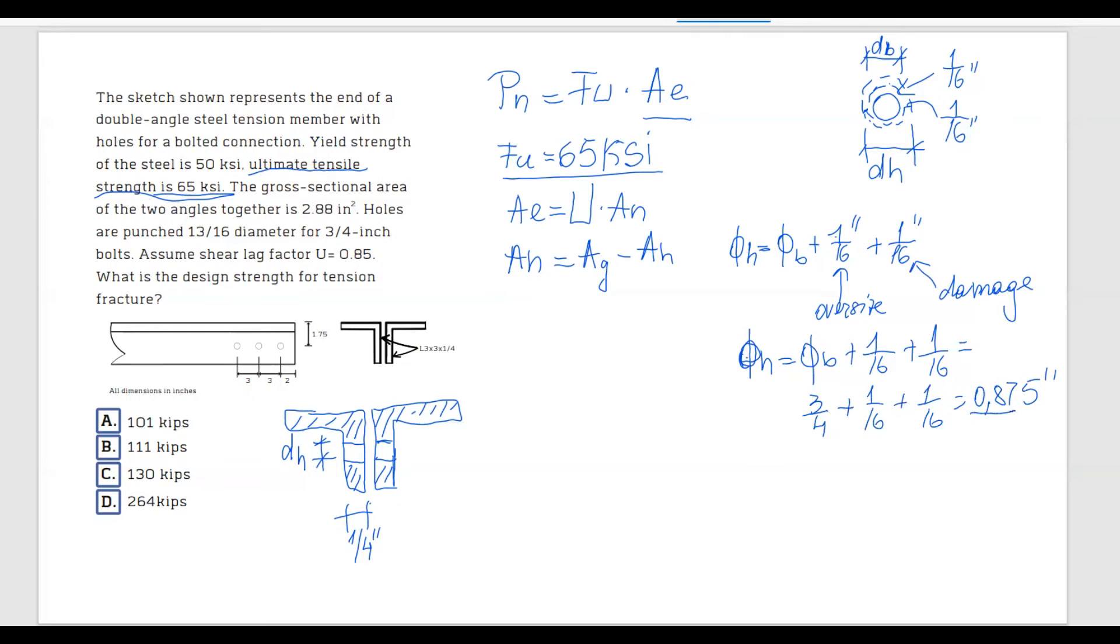So this is the diameter of the hole. And you might ask what is this then? When this is the nominal diameter of the hole, meaning that diameter of the hole is going to be equal to the nominal diameter of the hole, which is... plus 1 over 16 of an inch.